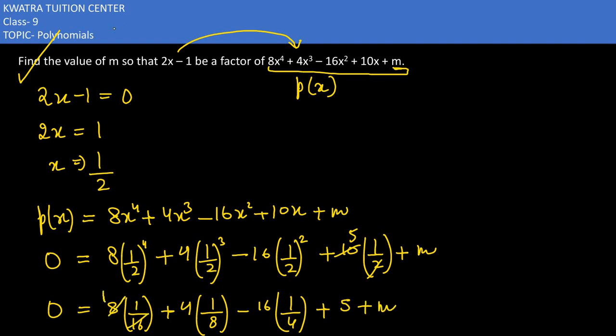Cancel: 8/16 becomes 1/2, 4/8 becomes 1/2. So we have: 0 = 1/2 + 1/2 - 4 + 5 + m. 5 minus 4 gives us positive 1.